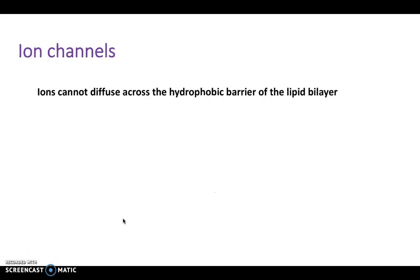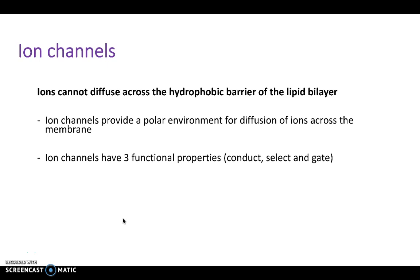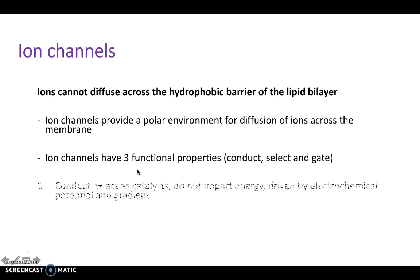Ion channels are present because ions cannot diffuse across the hydrophobic barrier of the lipid bilayer. Ion channels provide a polar environment for diffusion of ions across the membrane. They have three functional properties: to conduct, select, and gate.